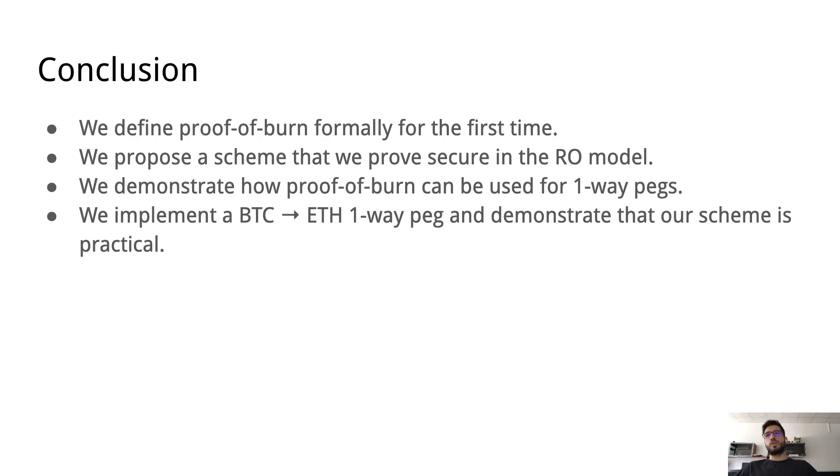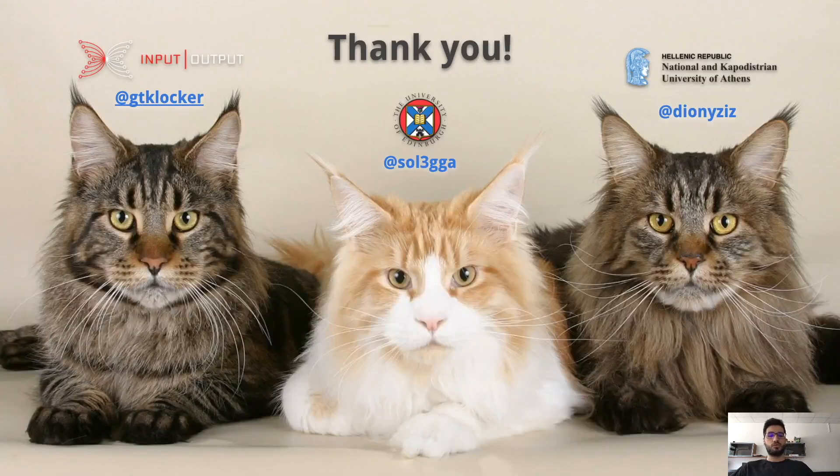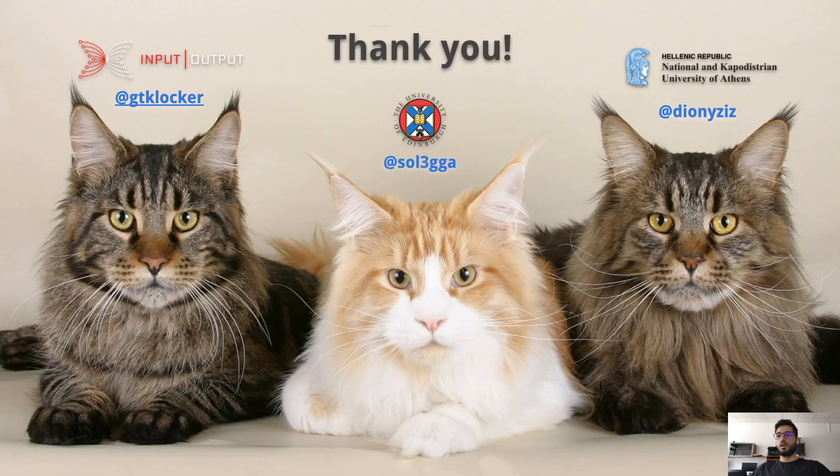To conclude, in this work, we define proof of burn formally for the very first time. We propose our own scheme, which is pretty simple, but we also prove it secure in the random oracle model. We show how proof of burn can be used for one-way pegs, even for cryptocurrencies with disjoint blockchains. We provide the implementation of a Bitcoin to Ethereum one-way peg using our own proof of burn scheme, and we actually demonstrate that it is practical. Thank you very much for your attention, and we can now take questions.